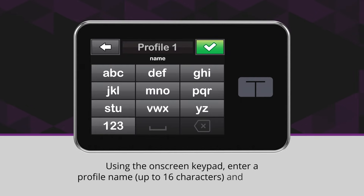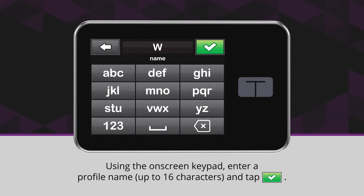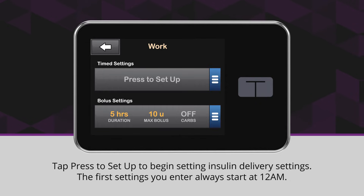Using the on-screen keypad, enter a profile name up to 16 characters, and tap the green checkmark icon. Tap Press to Set Up to begin setting insulin delivery settings.